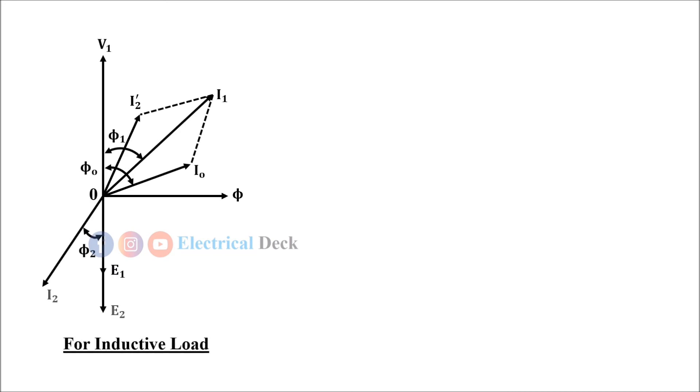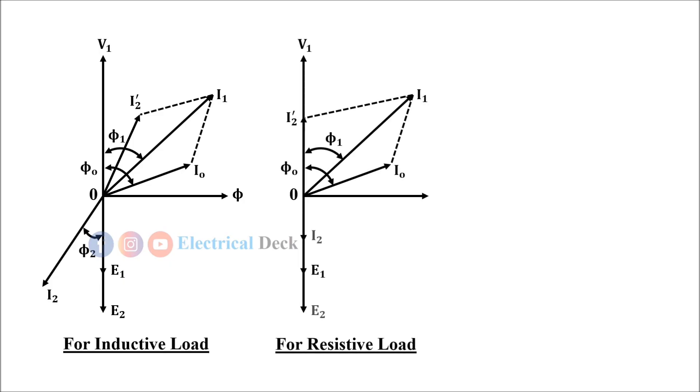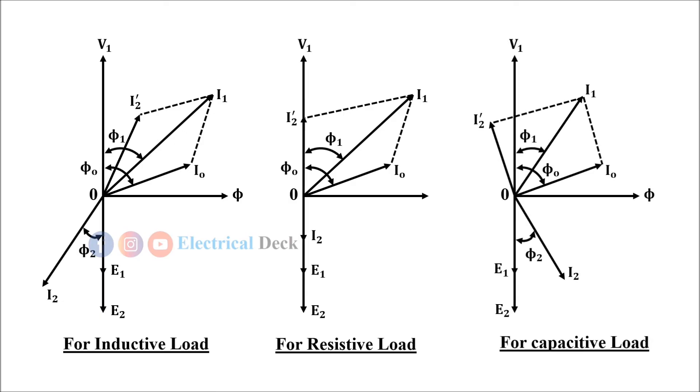Let us see the phasor diagram for different load conditions. If the load is inductive, secondary current I₂ lags secondary EMF E₂ by an angle φ₂. If the load is pure resistive, both I₂ and E₂ will be in phase. Similarly, if the load is capacitive, I₂ leads E₂ by an angle φ₂. Remember that I₂' is always in antiphase with I₂.